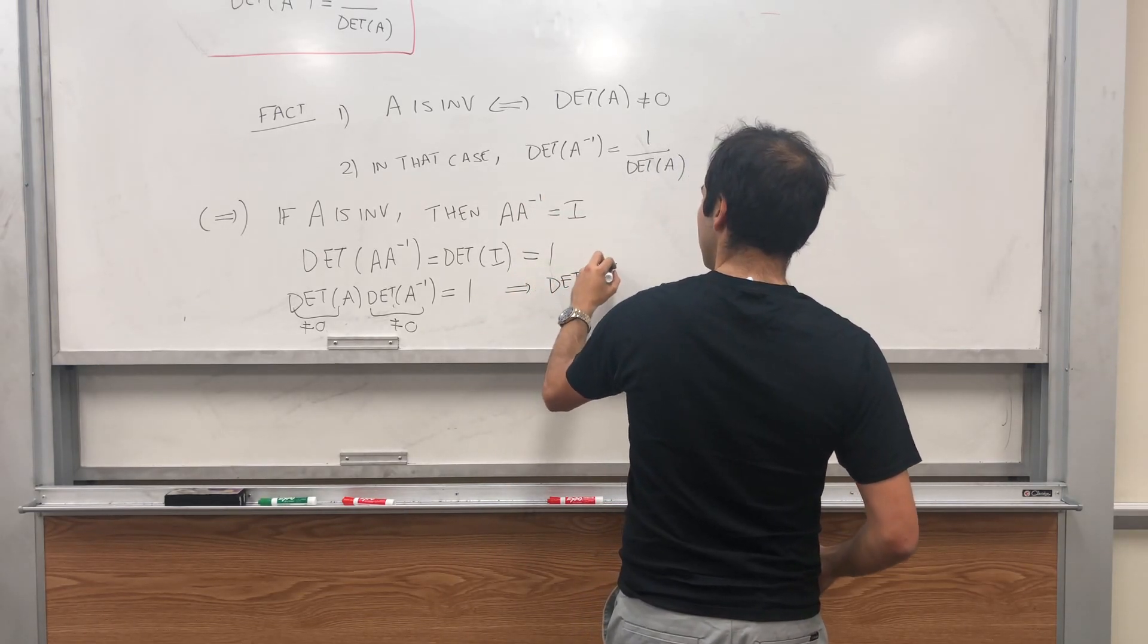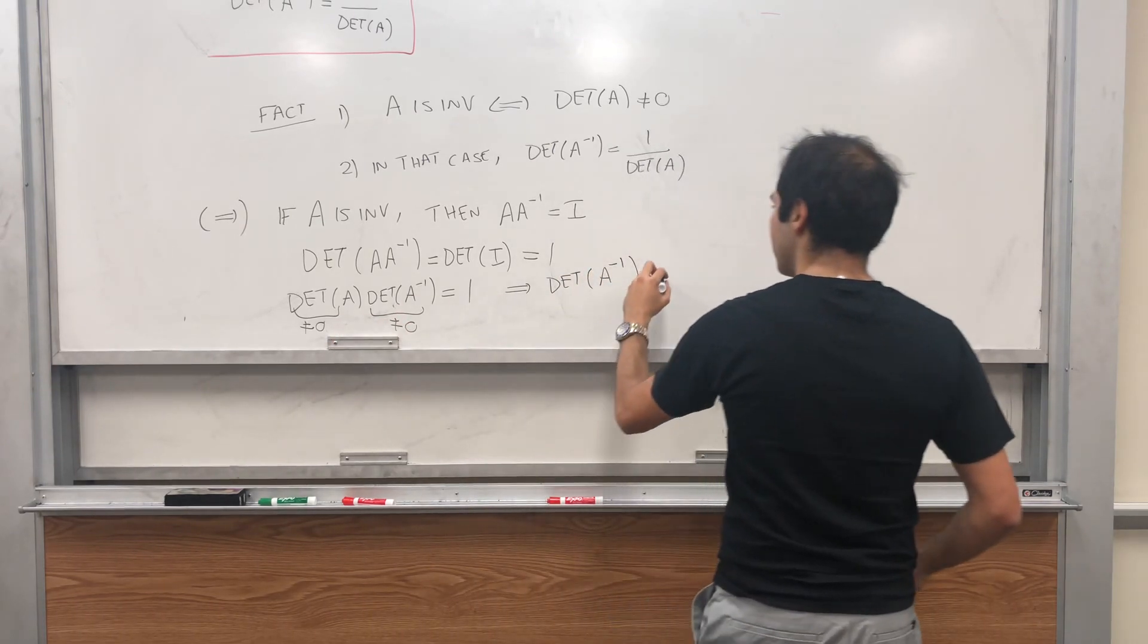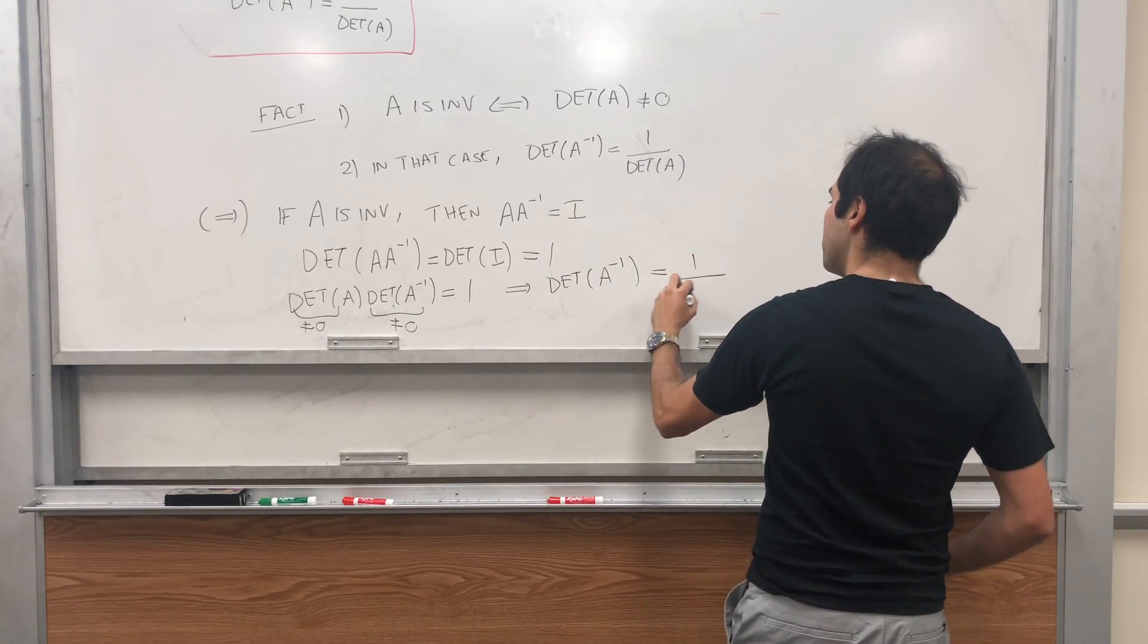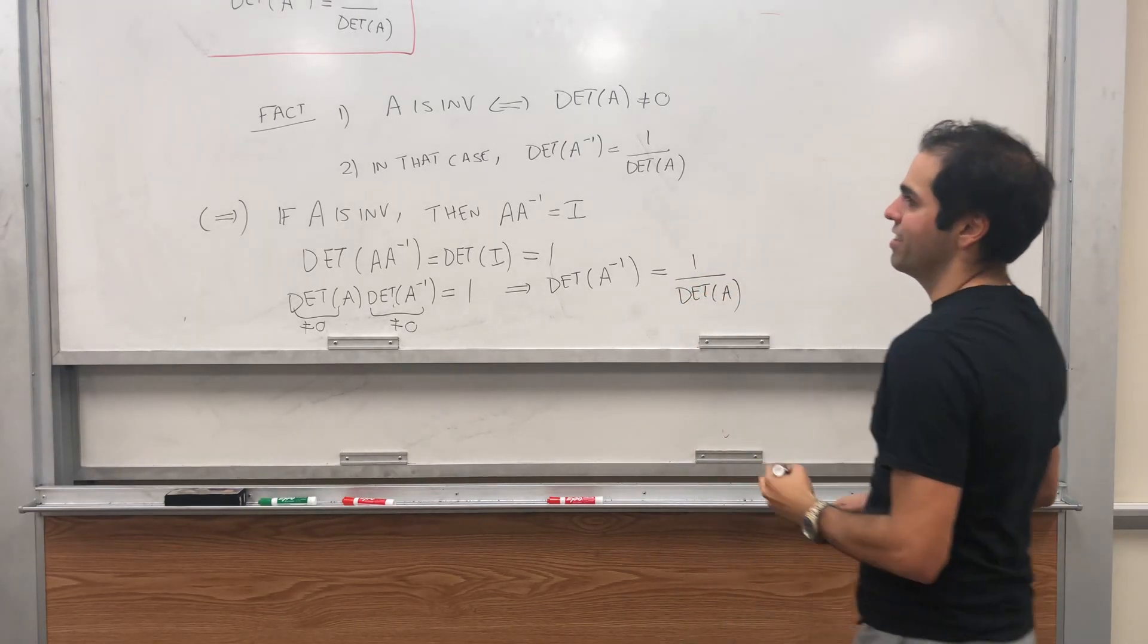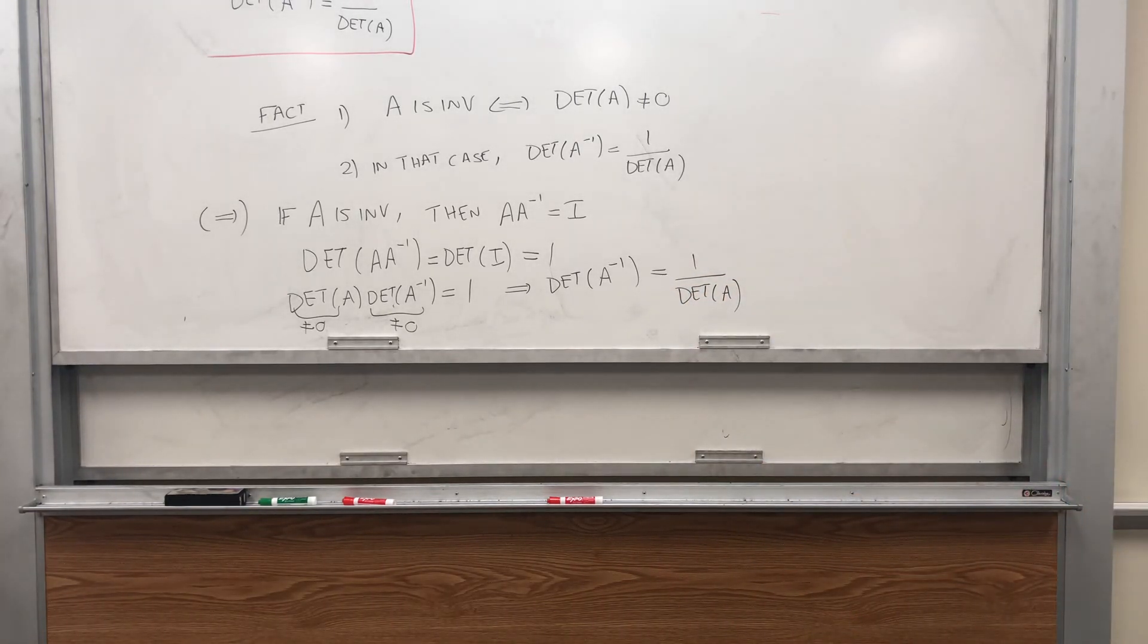So that already takes care of one part, and also we can get our identity just by dividing by the determinant of A. So if you divide both sides by the determinant of A, you get the determinant of A inverse is 1 over the determinant of A. So good, we have this formula.